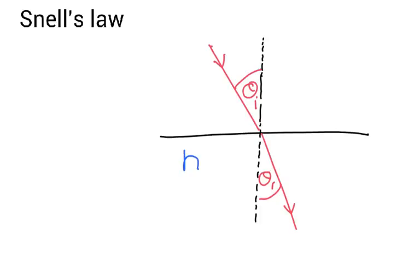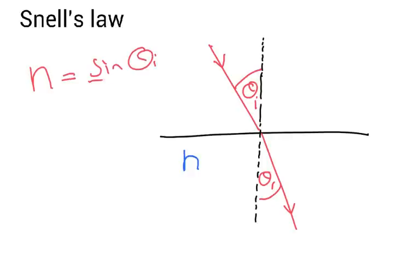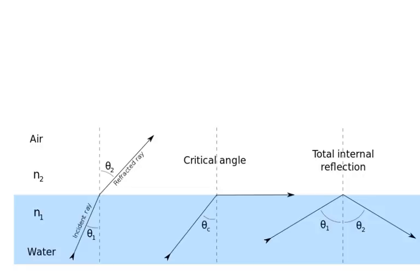There's a law that relates the size of the angle of incidence with the size of the angle of refraction — it's called Snell's law. You can use it to calculate one of these unknowns if you know the other two, so if you know the refractive index and the angle of refraction you can work out the angle of incidence. The equation is: n, which is the refractive index of the material that the light is going into, is equal to sine of the angle of incidence divided by the sine of the angle of refraction.